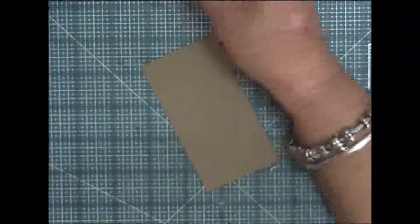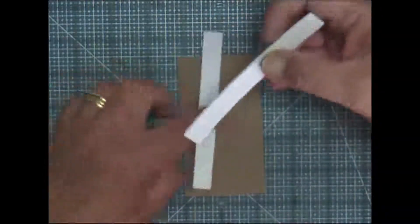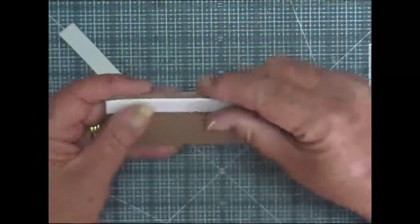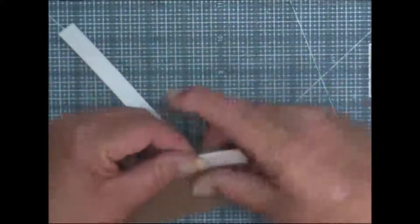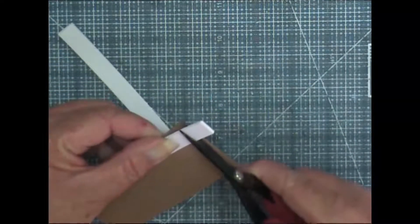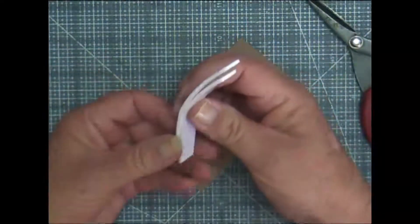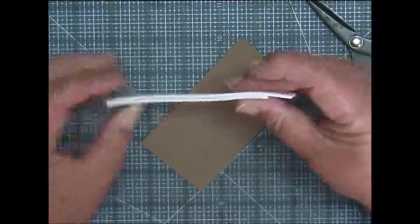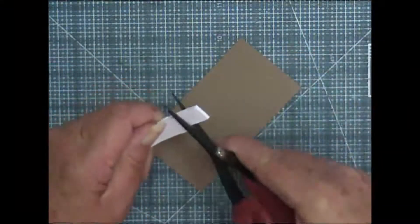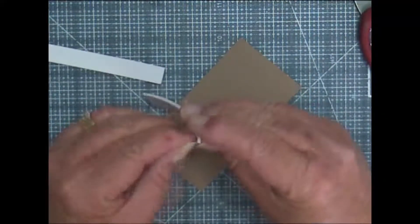On the back of that, I'm going to use fun foam that I've covered up with double-sided tape and then cut in half-inch strips. It makes a very inexpensive dimensional foam adhesive, so I'm going to adhere this down.